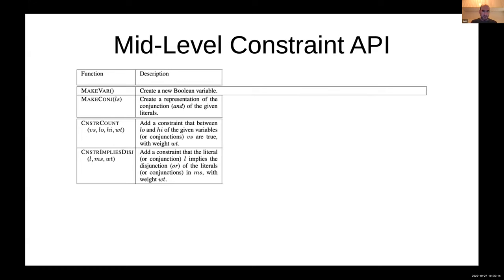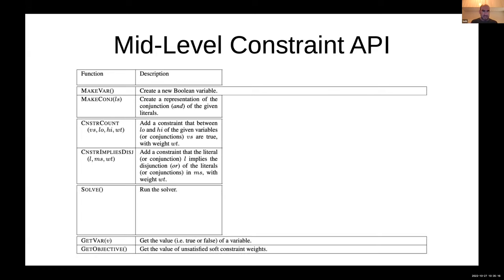The constraints can have weights and be hard or soft. You can run the solver and get the result out. If you have soft constraints, you can get the objective value of the unsatisfying soft constraints.